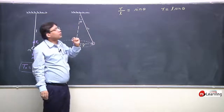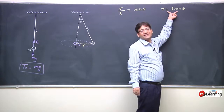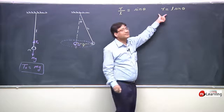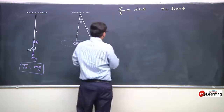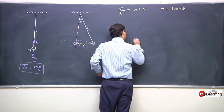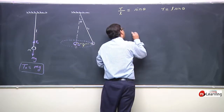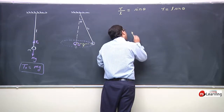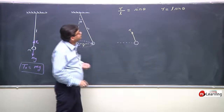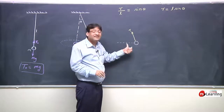First I will draw the free body diagram. This is the particle. Due to the thread, tension T acts along the length of the thread. Its weight Mg acts vertically downward. Since the particle is in a circular path, it has centripetal acceleration directed radially inward.